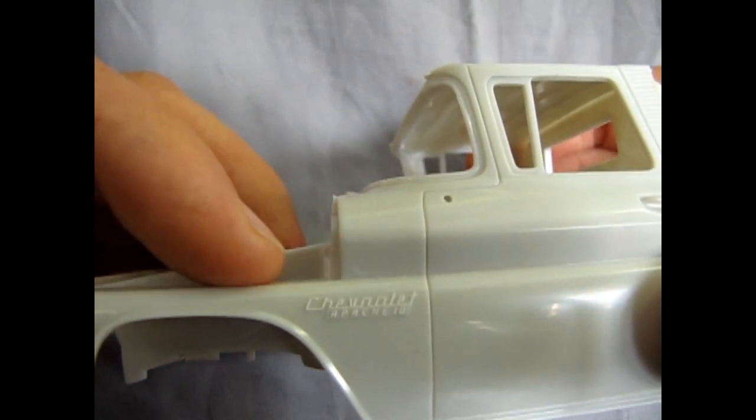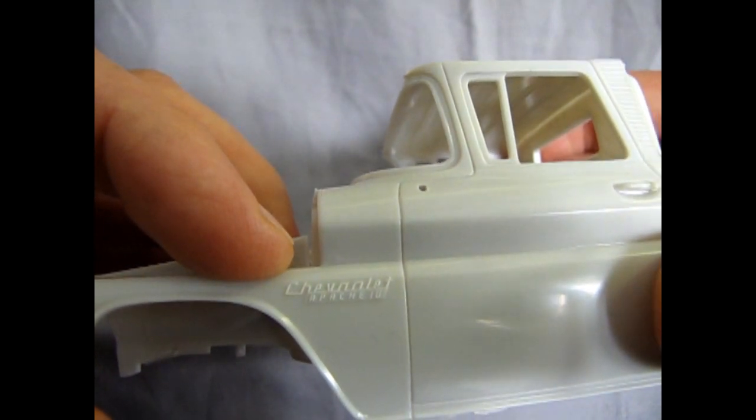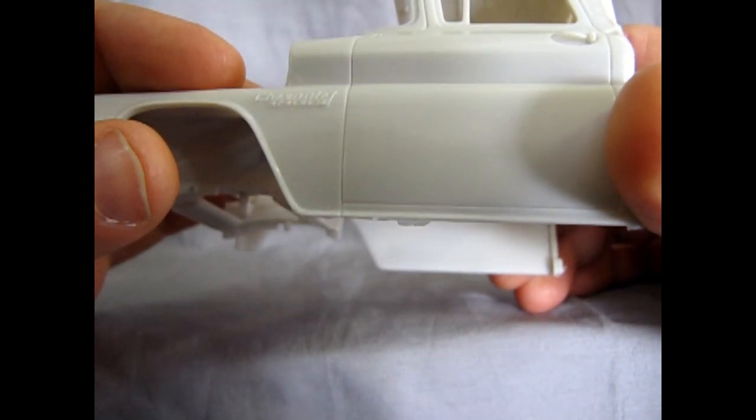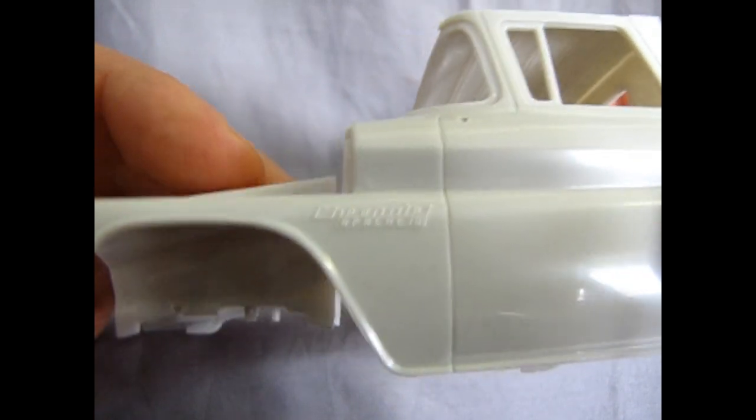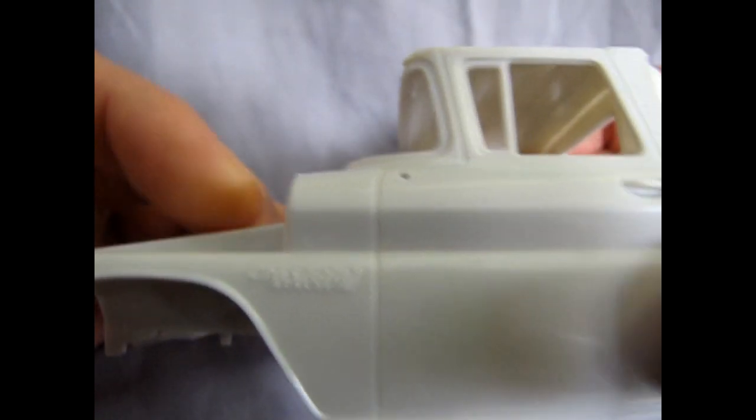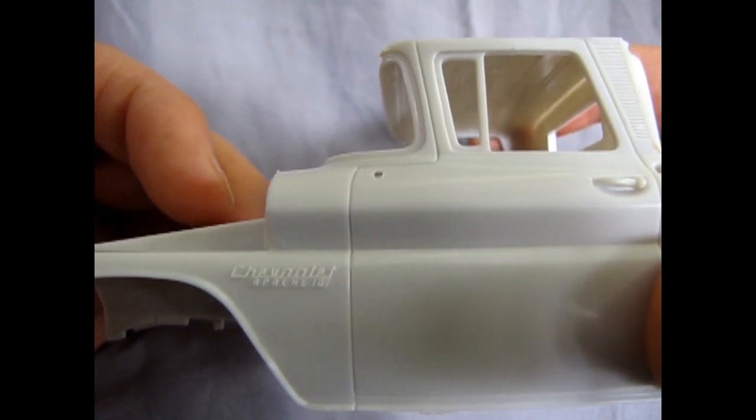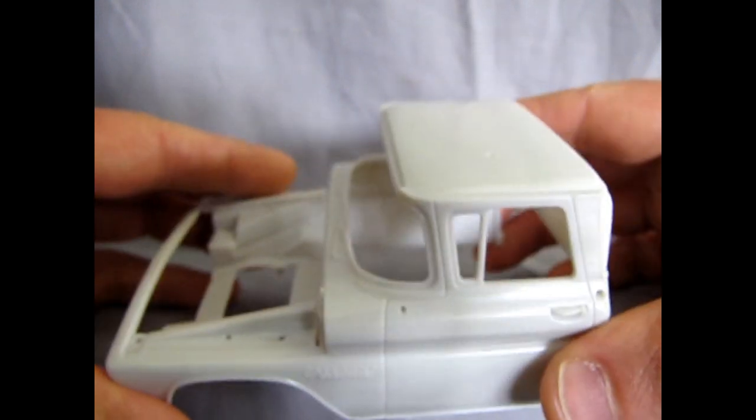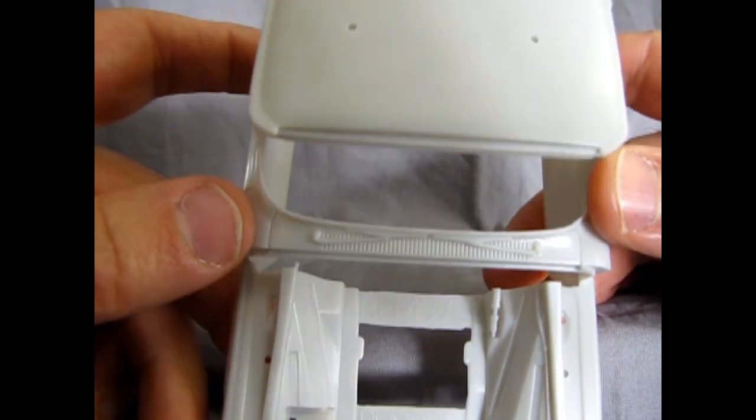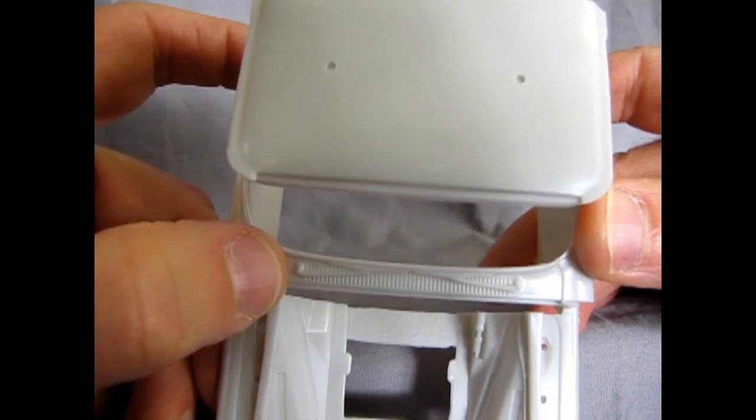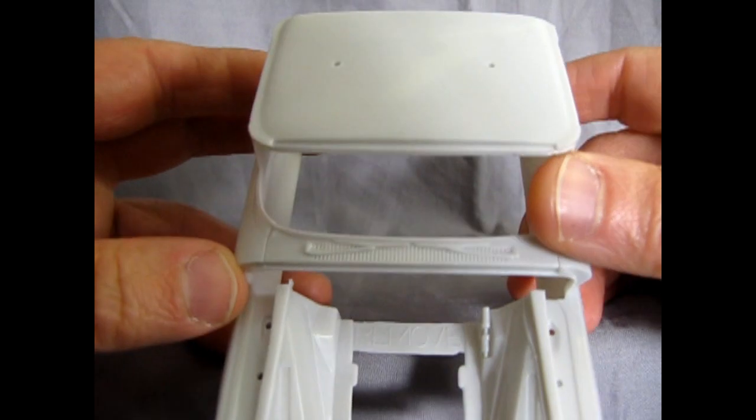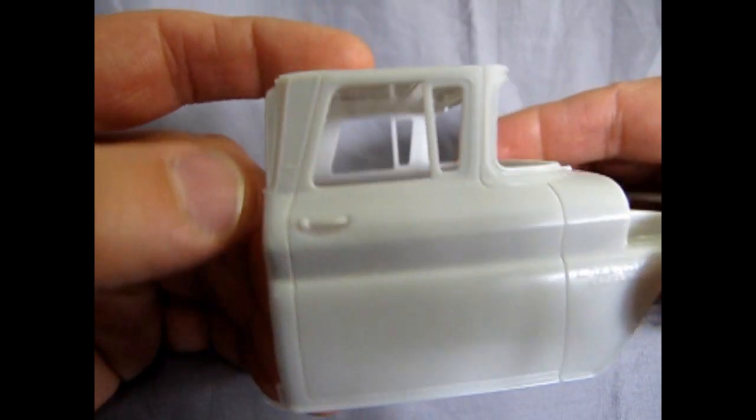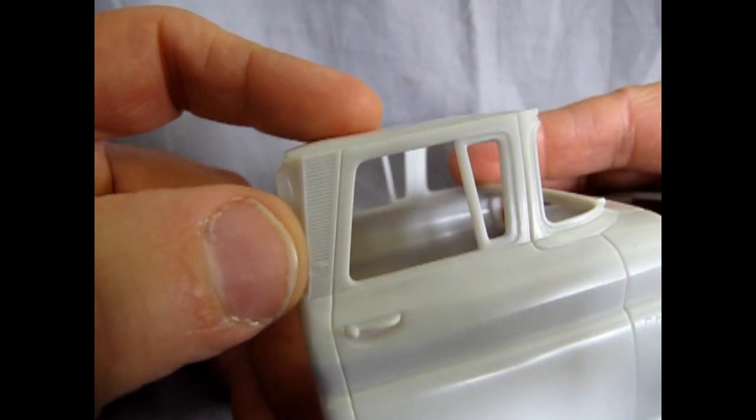If you look up close here, you can see this nice Chevrolet fleet side type script here. It says Chevrolet Apache 10 on that. And you can always paint that with a very fine paint brush, like a 5 over 0 or 20 over 0, with your chrome paint once you paint the body. Notice the nice insert here, your vents and your windshield wipers molded in. It's the way they did it in the older days. Same with the molded on door handle, not separate, but nice detail. The vents up here too.